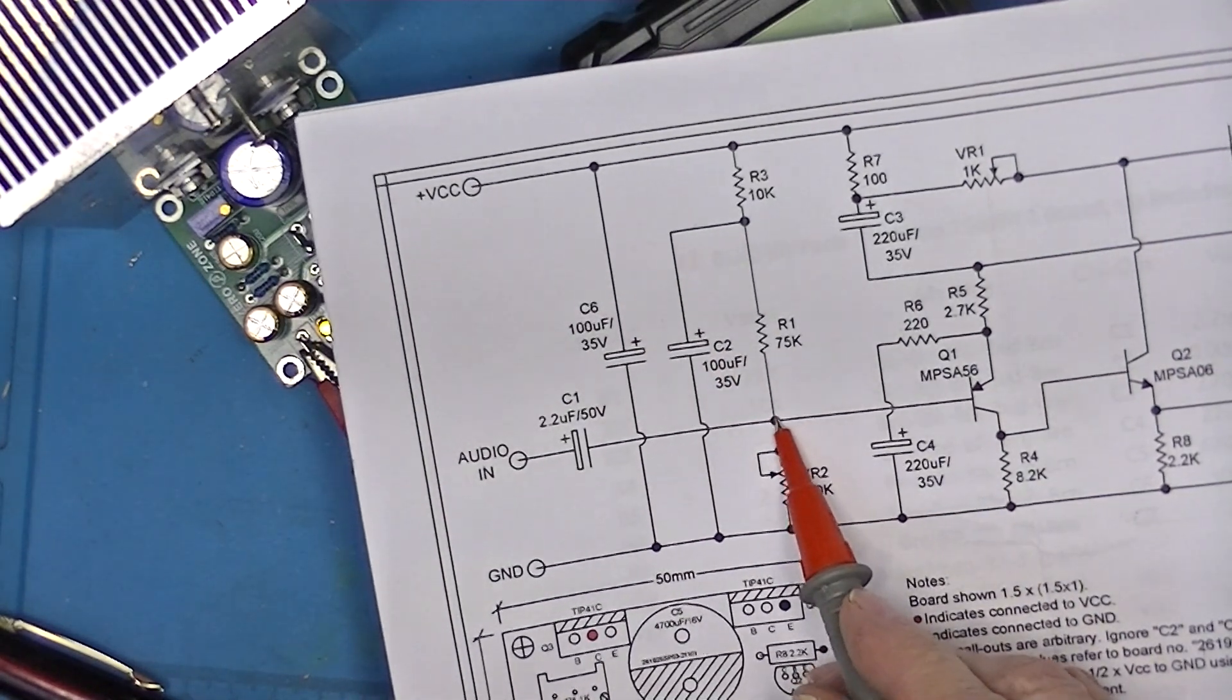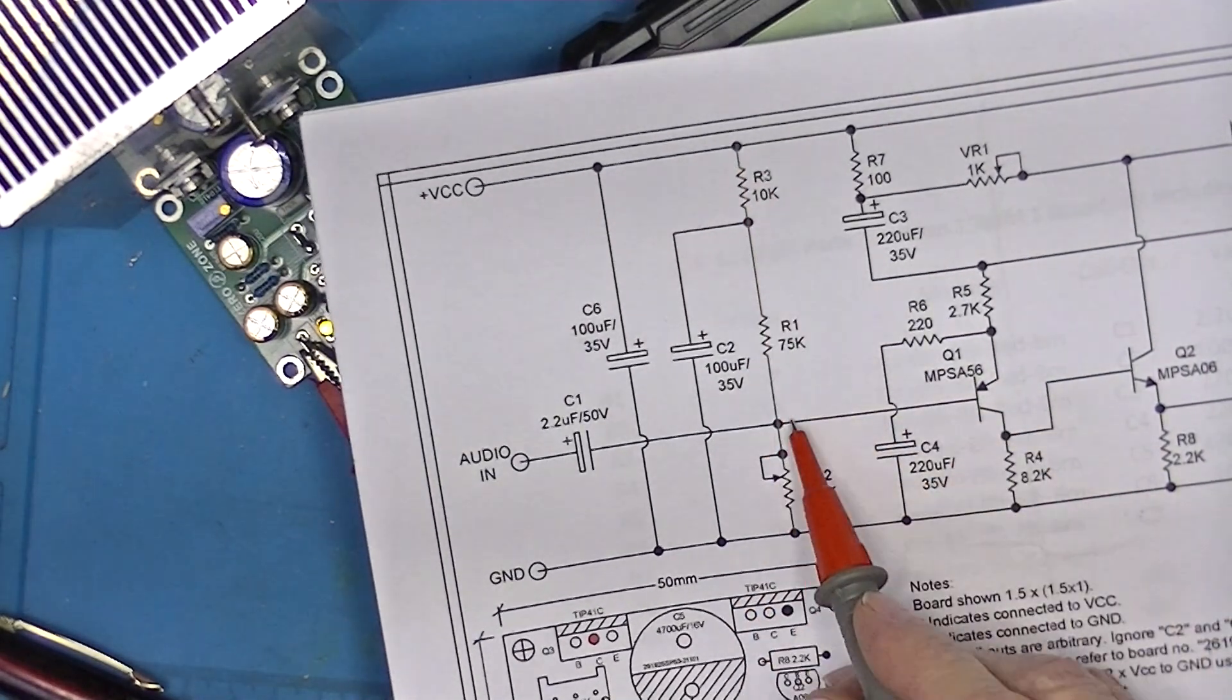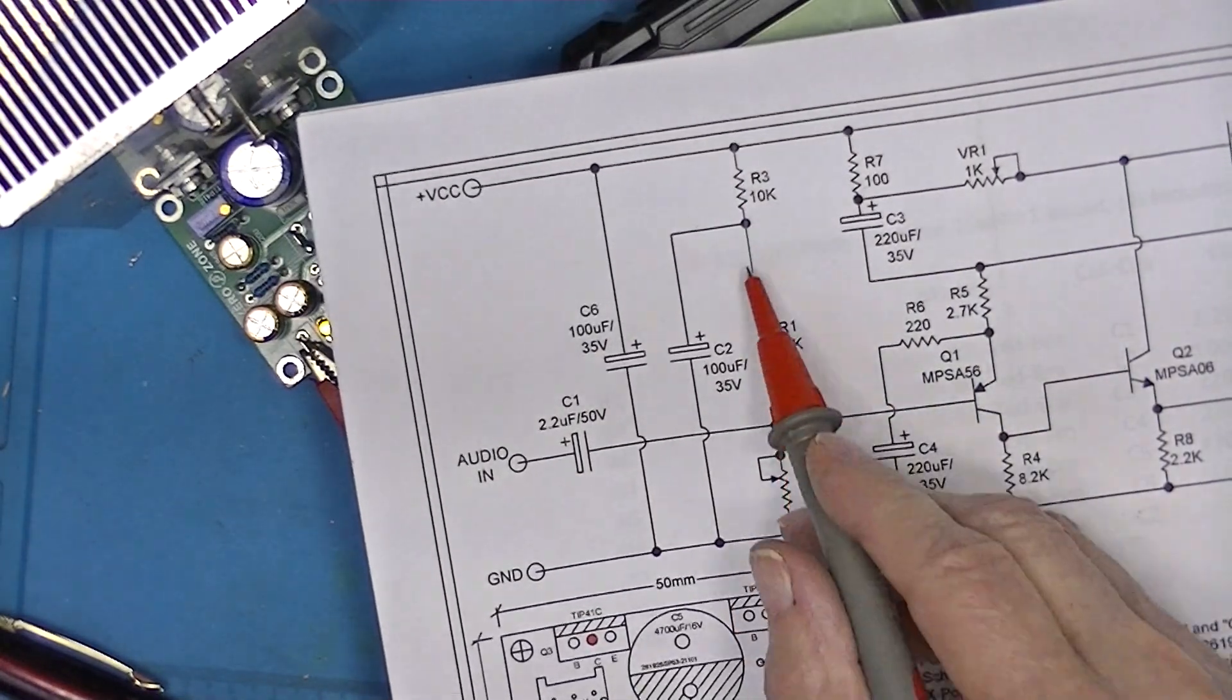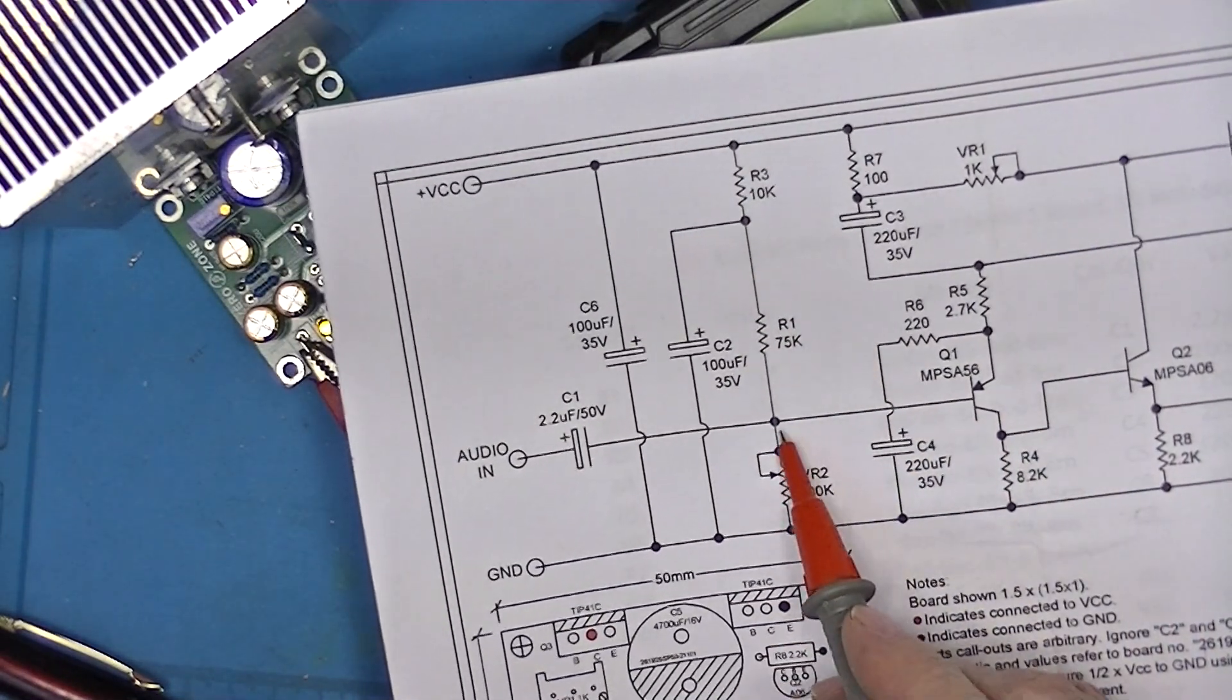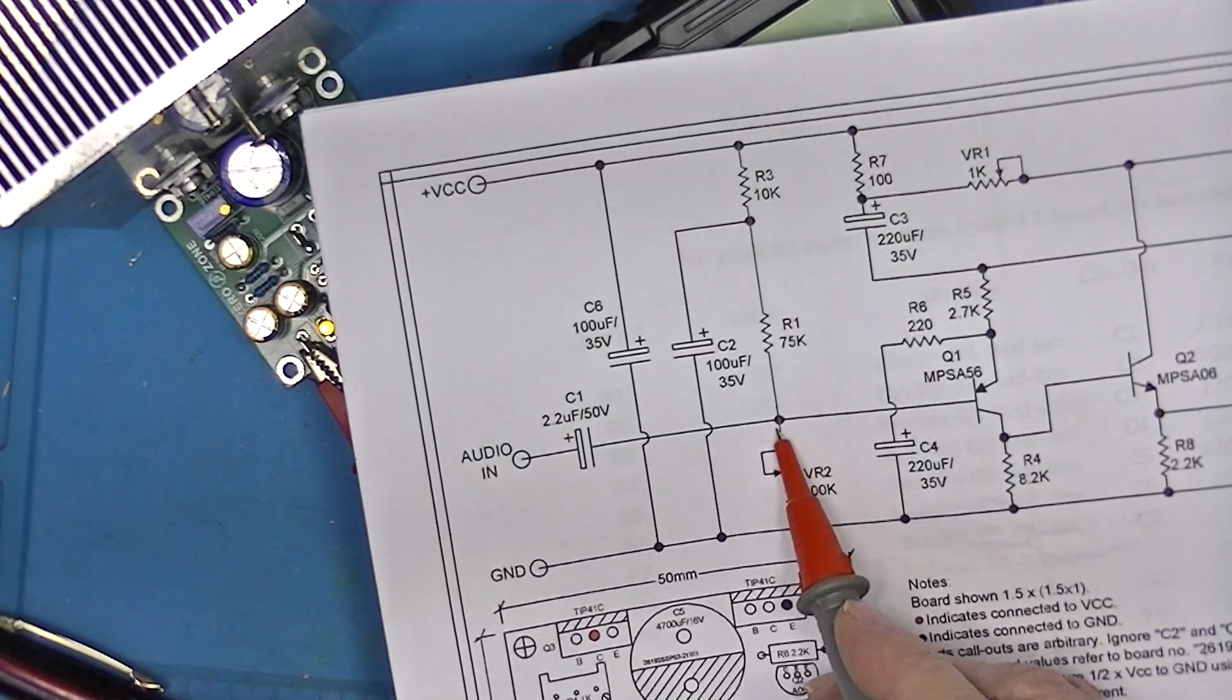But since this voltage has to supply some current which is flowing through these resistors in addition to the static voltage divider current, we end up with less than V, less than one half VCC.